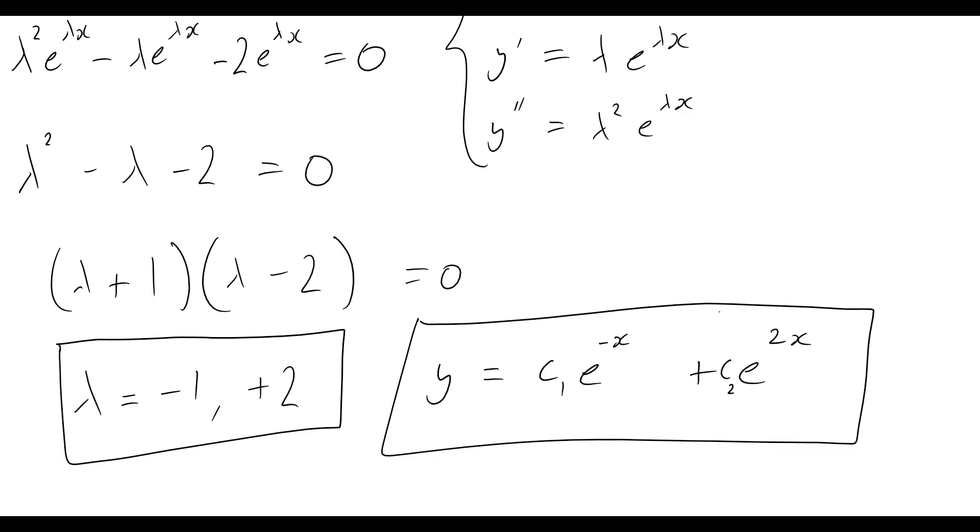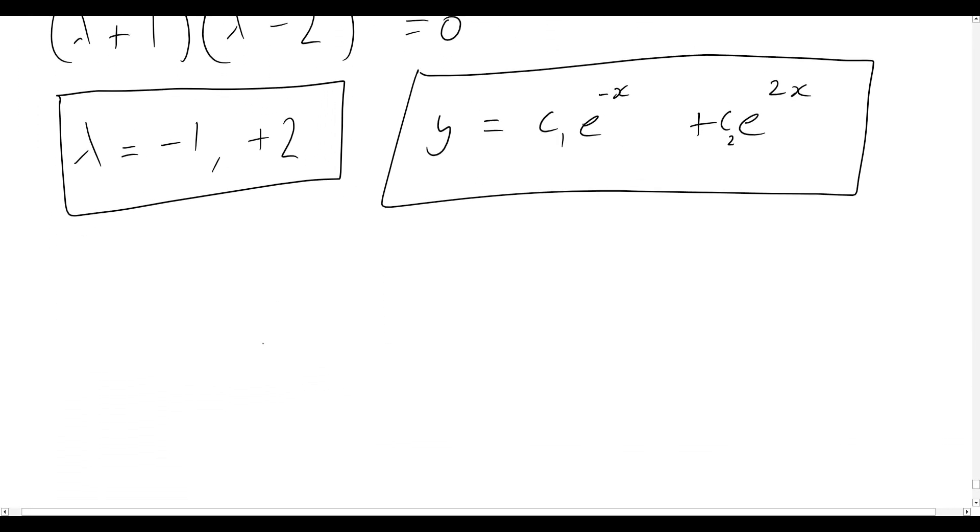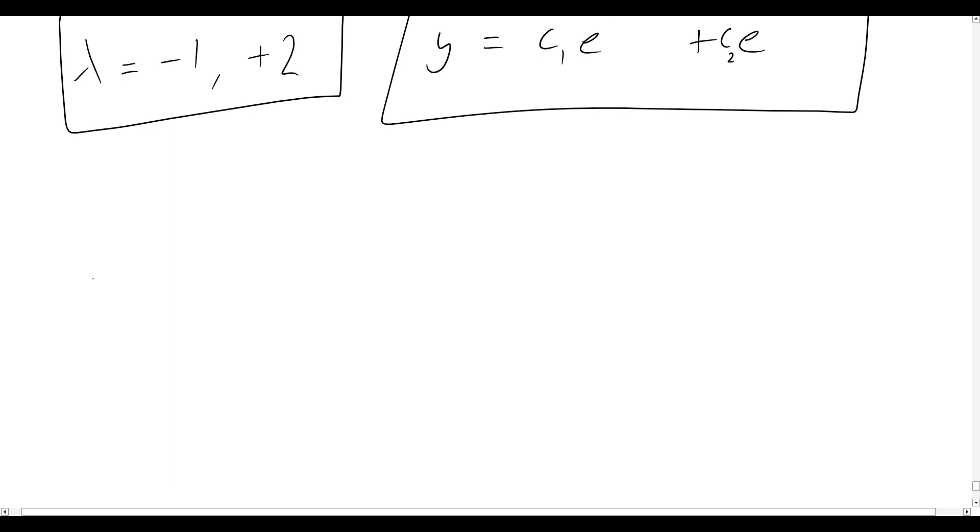Now the next interesting example, however, will actually come from the situation when we have repeated roots. And I would like to discuss this in a little bit more detail. So let's look at another problem here. So we've got y double prime plus two y prime plus y equal to zero.